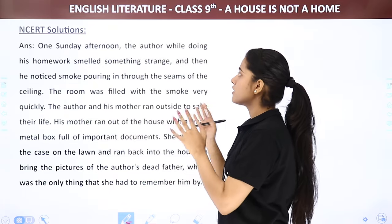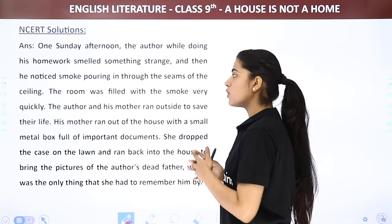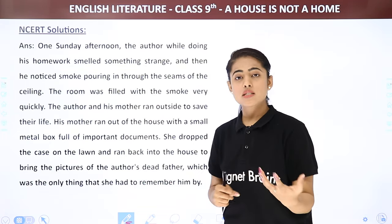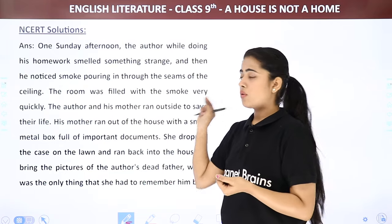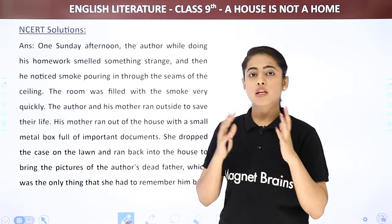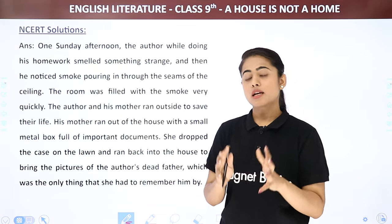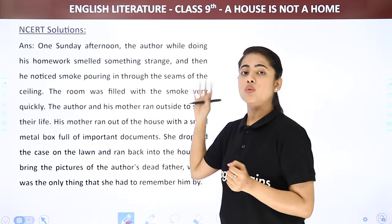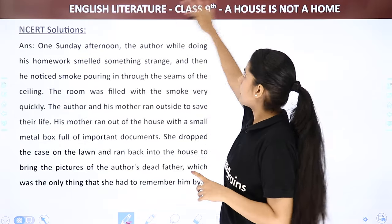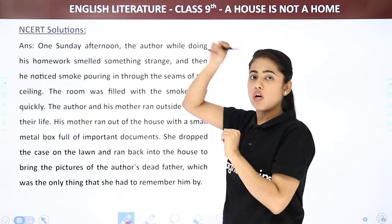So the answer to this question is: One Sunday afternoon, the author while doing his homework smelled something strange and then noticed smoke pouring in through the seams of the ceiling. If it is a long answer, you can add that the author was sitting in the dining room completing his homework on the dining table when suddenly he smelled something unusual. Then he saw smoke coming from the seams of the ceiling — the seams being the corner lines of the ceiling.